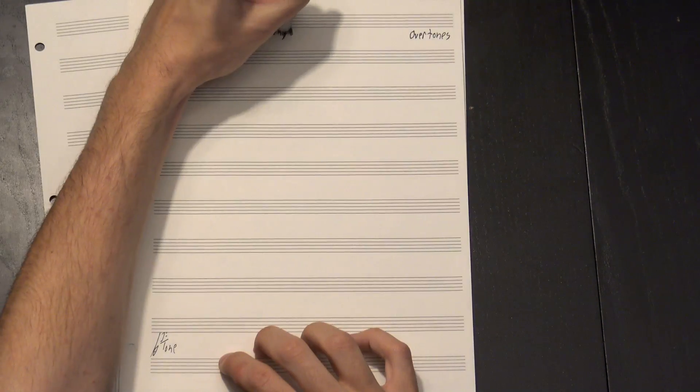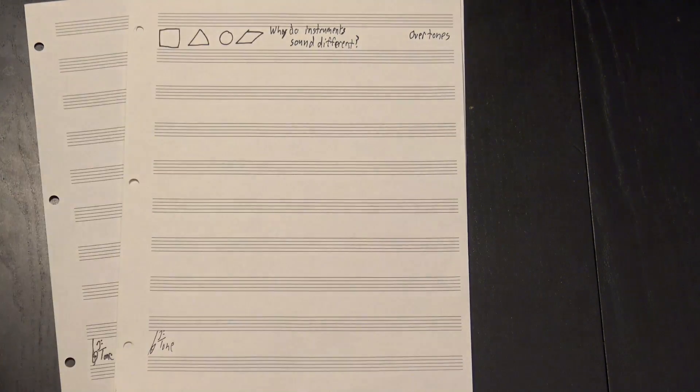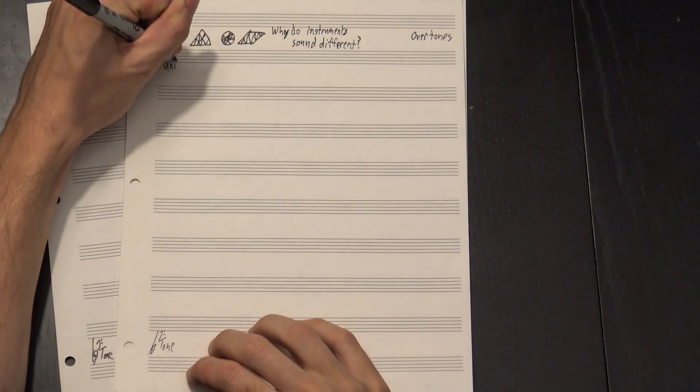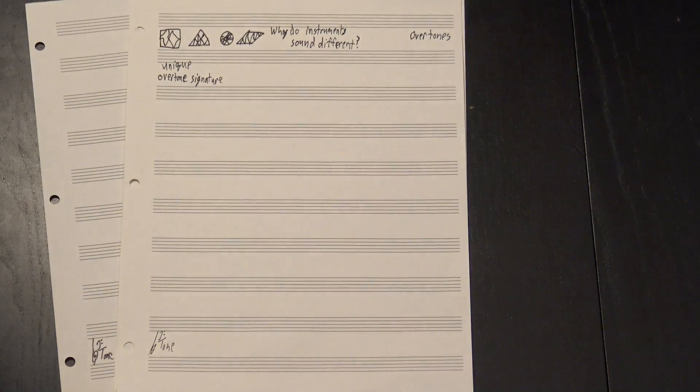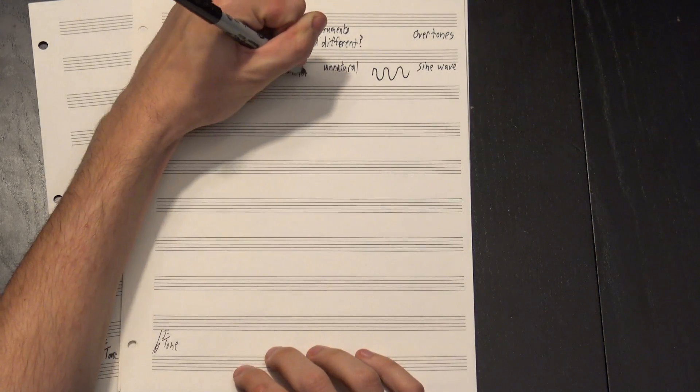Overtones also help answer our question about why instruments sound different, because the way a given instrument is shaped and how sound waves resonate within it gives that instrument a unique overtone signature. This is why our sine wave generator sounds unnatural. It has no overtones.